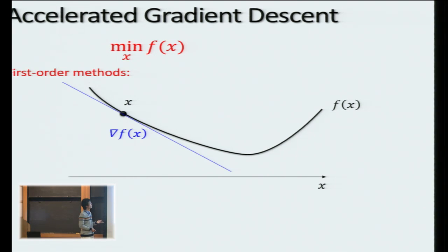That is, at any point x, the method, the algorithm, can compute the first-order derivative of the function, which is a vector at this point, and then, using that information, he can try to decide where to query next. In a number of queries,